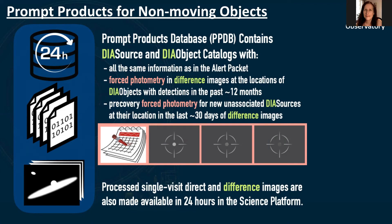Thus, if you are a scientist monitoring a fading transient or variable, you will be able to query the catalog and obtain forced photometry of your object of interest within 24 hours of each new observation. The DIA object catalog will also contain 30-day pre-discovery difference image forced photometry for all new DIA sources that were not associated with an existing DIA object. Thus, if you are a scientist looking for brand new transients with faint precursor outbursts, you will be able to query the catalog and obtain forced photometry at the location of a new DIA source in all difference images from the past 30 days. In this same 24-hour window, the processed single-visit direct images and the difference images will also be available via the Rubin Science Platform.